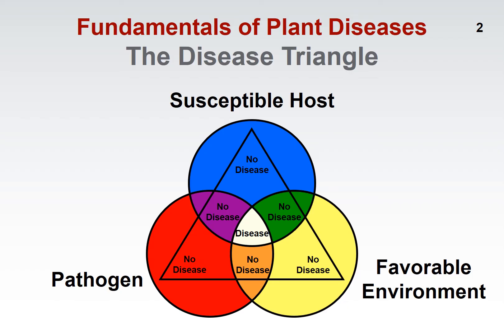The first is what's called a susceptible host — basically, you need some sort of plant that can come down with the disease. By the time we're done with this talk, you're going to realize that basically any plant can get a disease of one kind or another. The other thing you need as part of the disease triangle is something called a pathogen — microorganisms that can cause disease. We're going to spend a lot of time talking about the different types of pathogens and the diseases they cause.